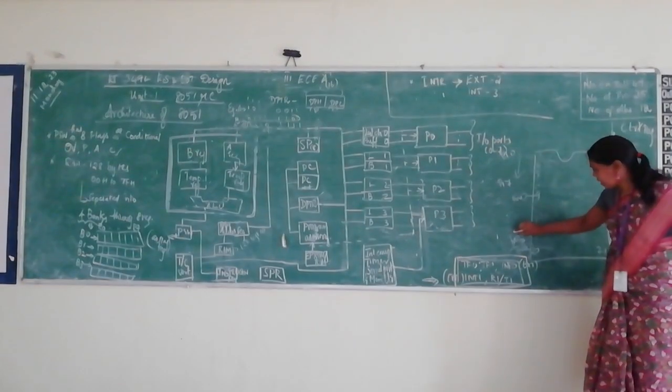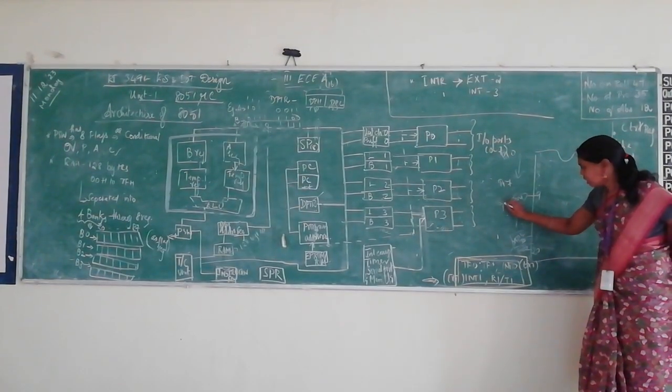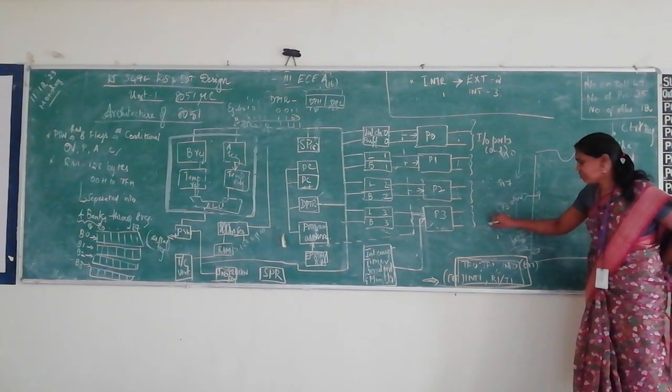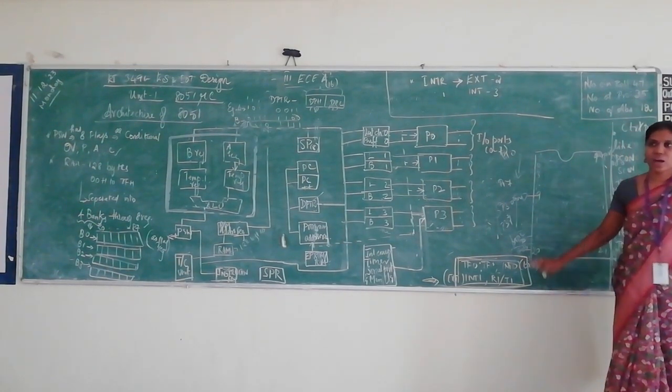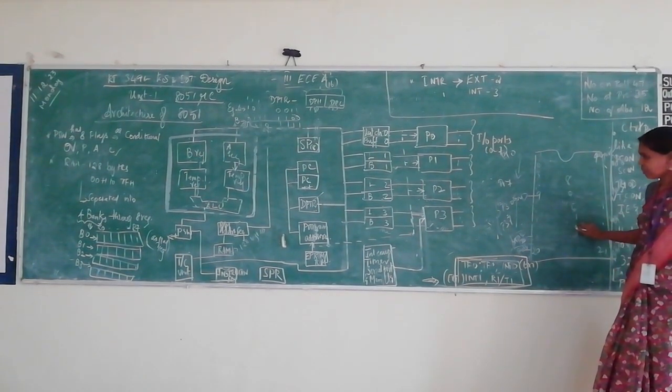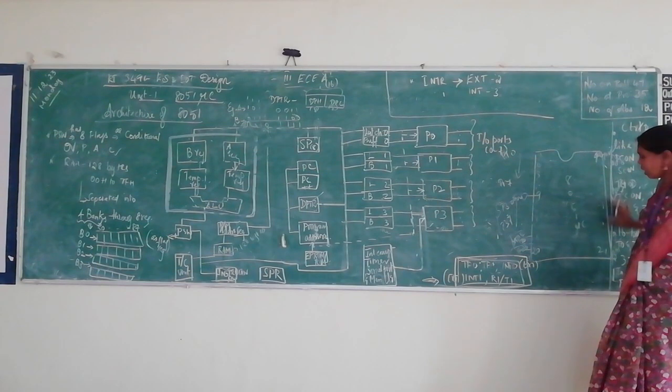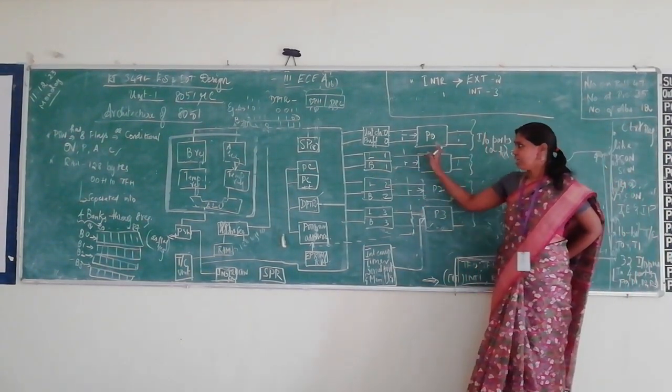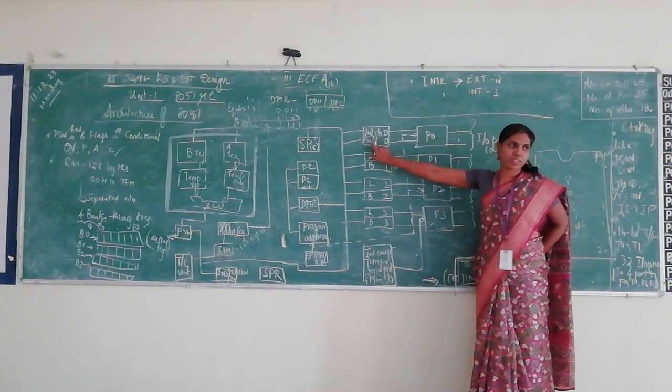And then you will be having port 3.0 to port 3.7 which will be performing special functions to receive or transmit data. So it's all concerned at the 8051 microcontroller. So all these four ports will be connected over here. That will be connected to a latch. What is a latch?